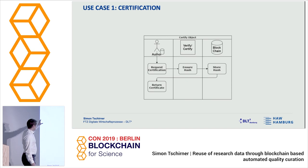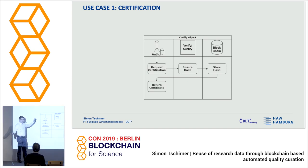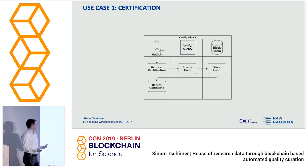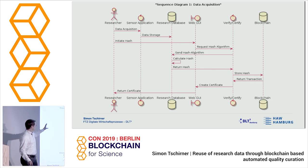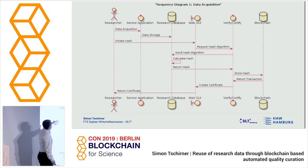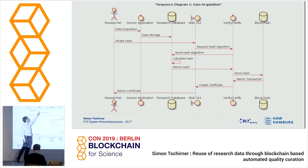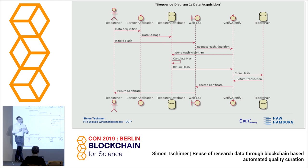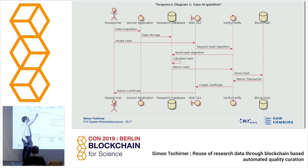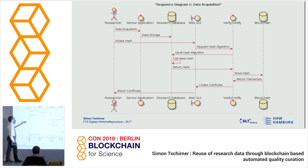The first use case is the simple certification — nothing new — just to request a certification when you're done with your research. In the more complex sequence diagram used for implementation: the researcher gains data with a sensor application of an experiment, and this data is stored in the research database. In a perfect world, we could access the data directly from the sensor and create the hash right there, so that there's no way the data is modified — but we are not there yet.